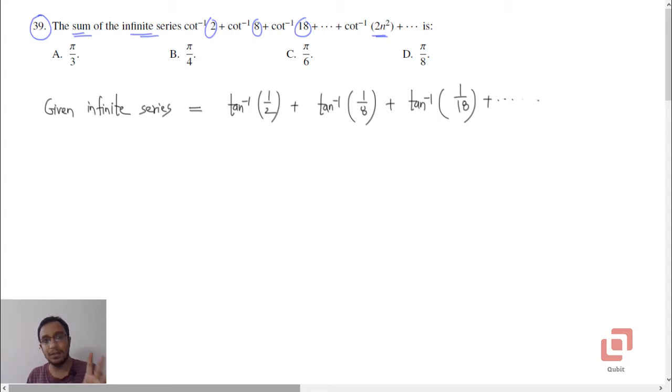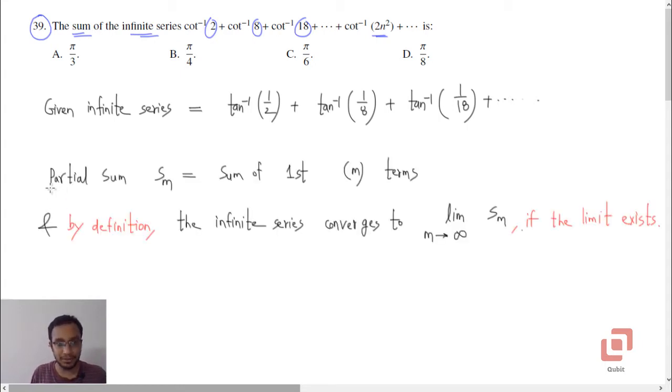What we do is we define a new term called the partial sum. This partial sum s subscript m is to be interpreted as or is to be defined as the sum of first m terms. So for example, if I take s2, s2 would mean the sum of the first two terms: tan inverse of 1 upon 2 plus tan inverse of 1 upon 8, that's it.